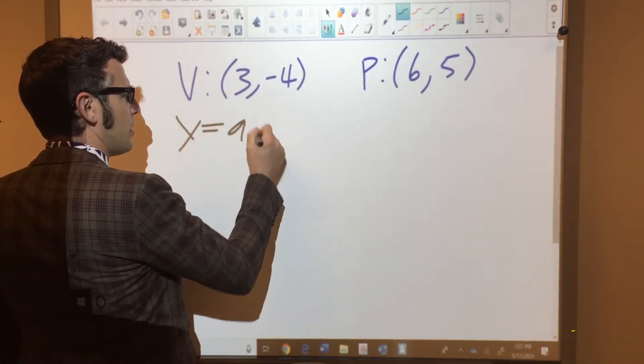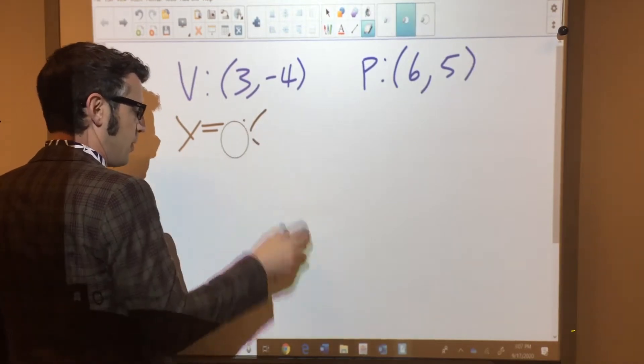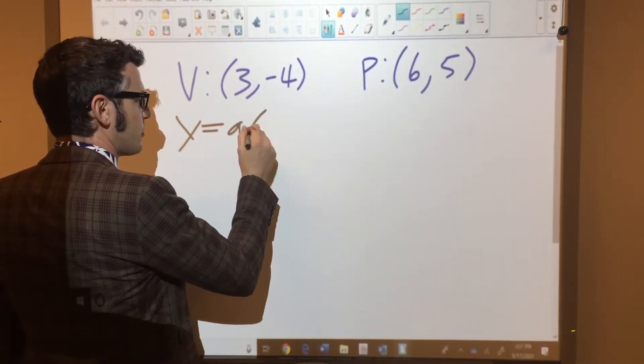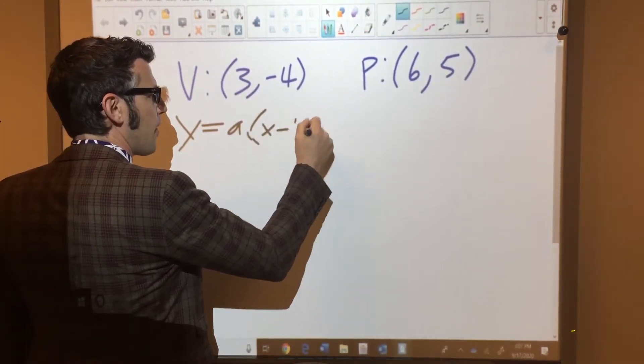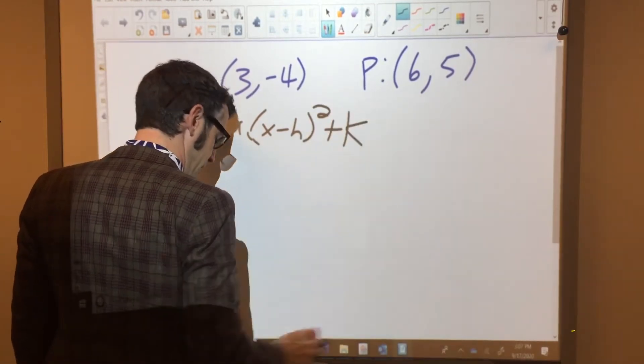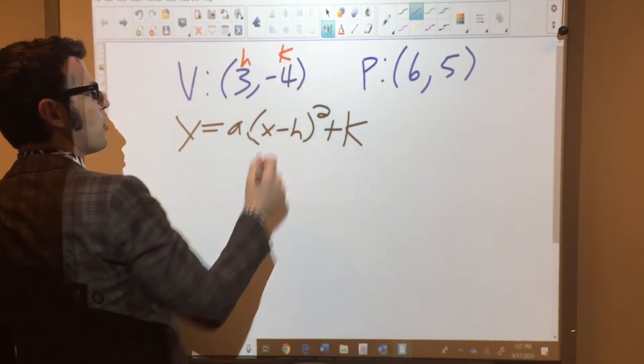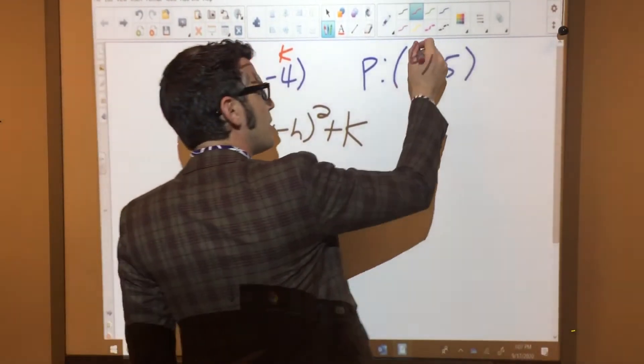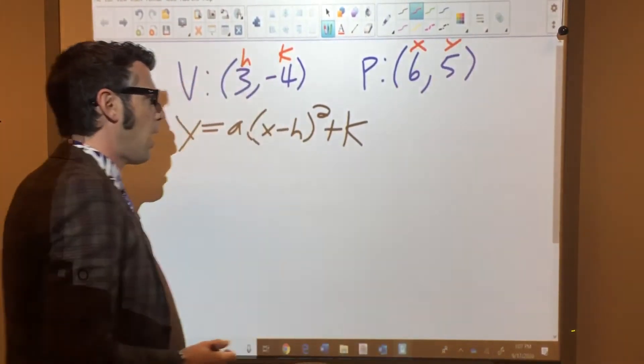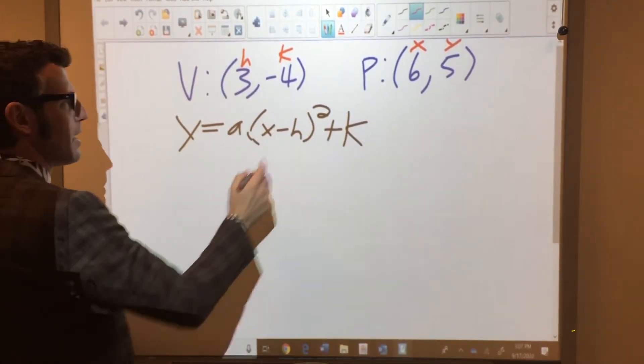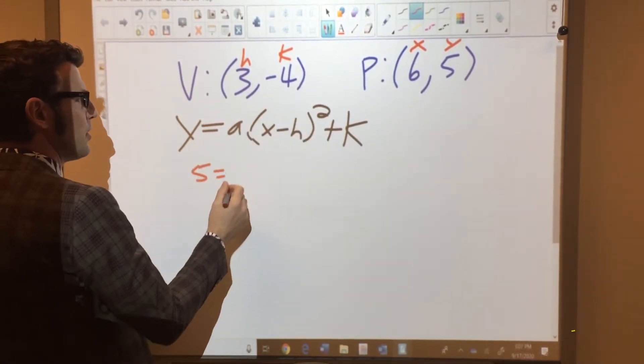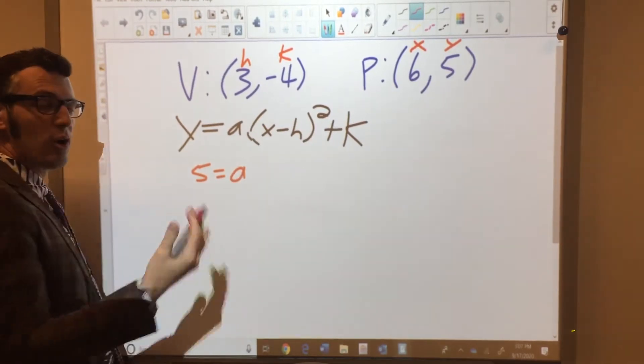So this is our general form, or the general vertex form, if you will. So let's plug in some information we know. Vertices are in the form h comma k. This point is x comma y. So if I plug these in, five goes over here. a, we don't know. We're going to have to solve for a.